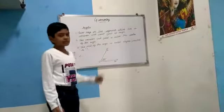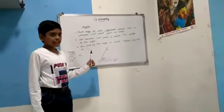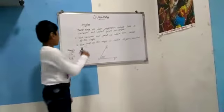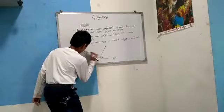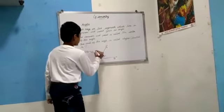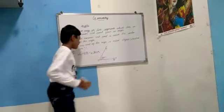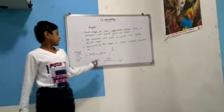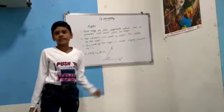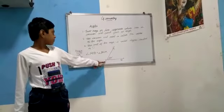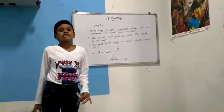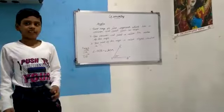Here we should write this angle as angle AOB. And this angle AOB can also be written as angle BOA. But it can never be written as OAB or OBA, because the center point — the vertex — should not come first. In the next class, we will know about types of angles.